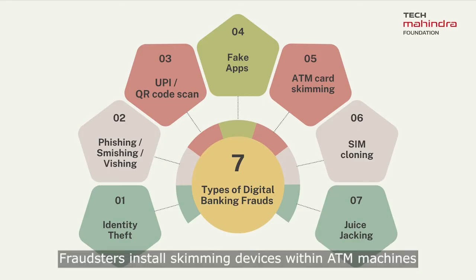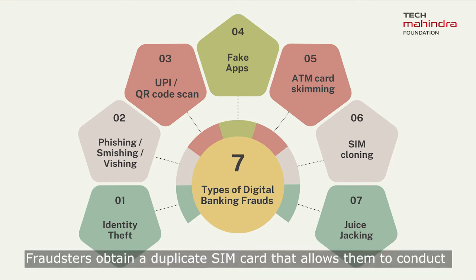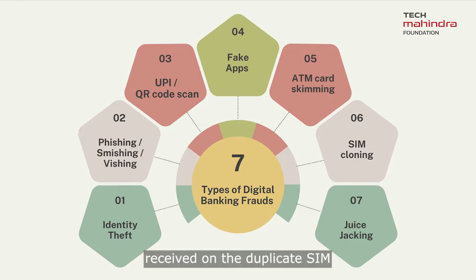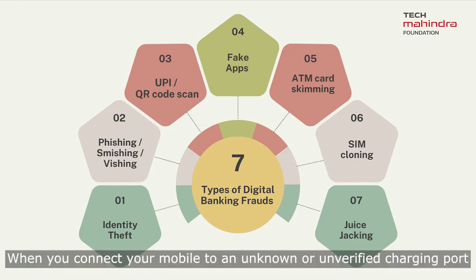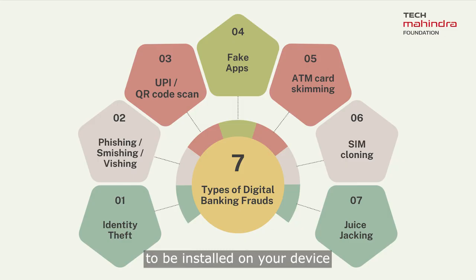Fraudsters install skimming devices within ATM machines to illicitly capture data from your card as you use it. Fraudsters also obtain a duplicate SIM card, which allows them to conduct digital transactions using one-time passwords or OTPs received on the duplicate SIM. When you connect your mobile to an unknown or unverified charging port, it opens the door for unknown apps or malware to be installed on your device.